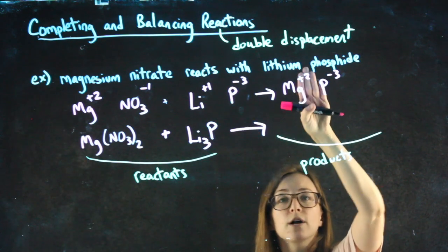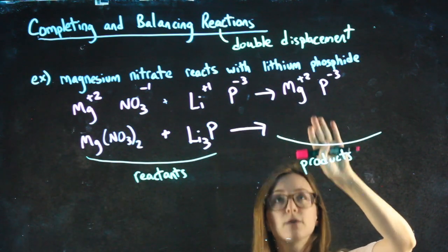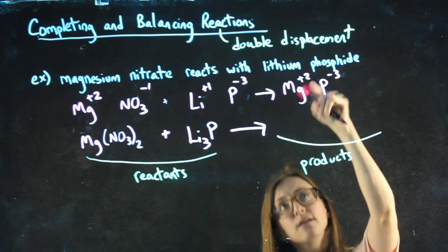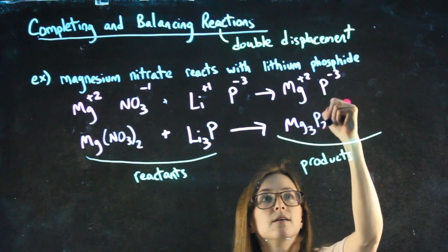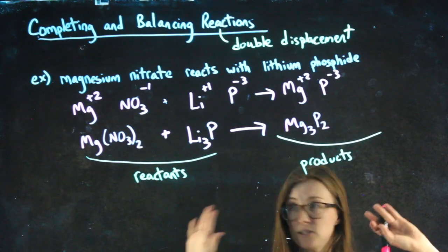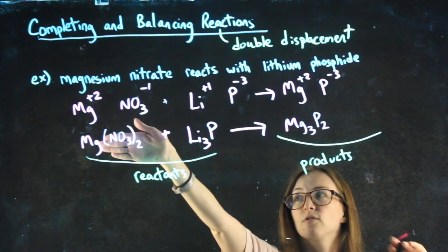Notice I'm only looking at this row of ions here, because we're going to re-crisscross on this side. Once I have a positive ion with a new negative ion, I re-crisscross, and it doesn't matter what I had over here on the left.